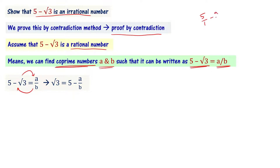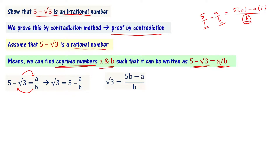Writing 5 as 5b/b, we get root 3 equals 5b/b minus a/b, which simplifies to root 3 equals (5b minus a) divided by b. Now, since a and b are integers, 5b is also an integer, and 5b minus a is an integer. So (5b minus a) divided by b is a ratio of two integers, which means it is a rational number.